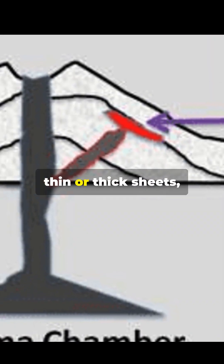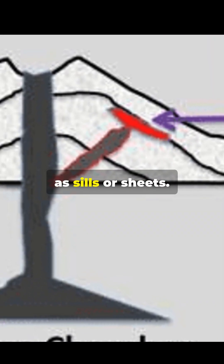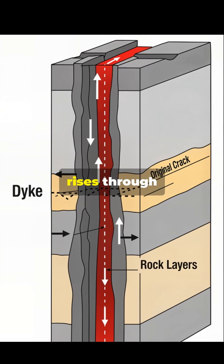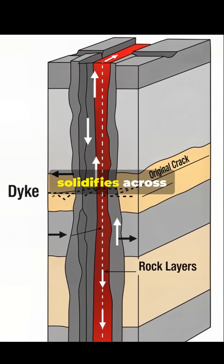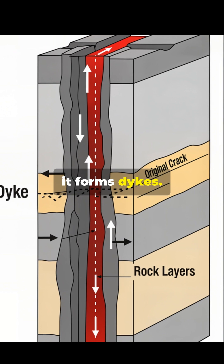When magma spreads horizontally in thin or thick sheets, these are known as sills or sheets. And when magma rises through cracks and solidifies across the layers, it forms dikes.